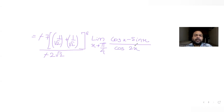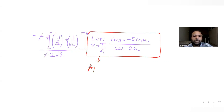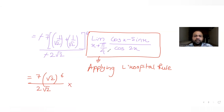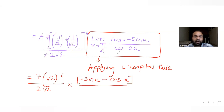Applying L'Hôpital's rule again to (cos x − sin x) / cos 2x: the derivative of the numerator is −sin x − cos x, and the derivative of cos 2x is −sin 2x · 2. So we now have the limit as x → π/4 of (−sin x − cos x) / (−2·sin 2x).